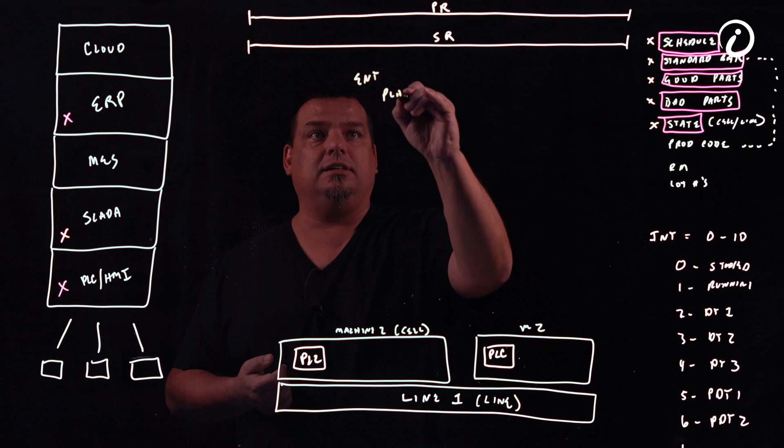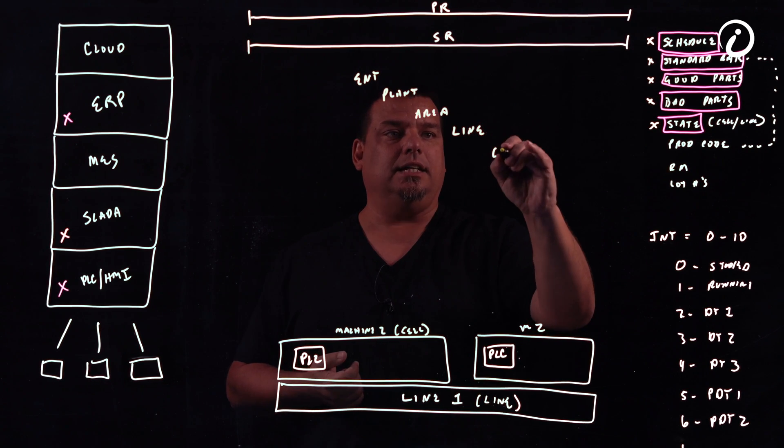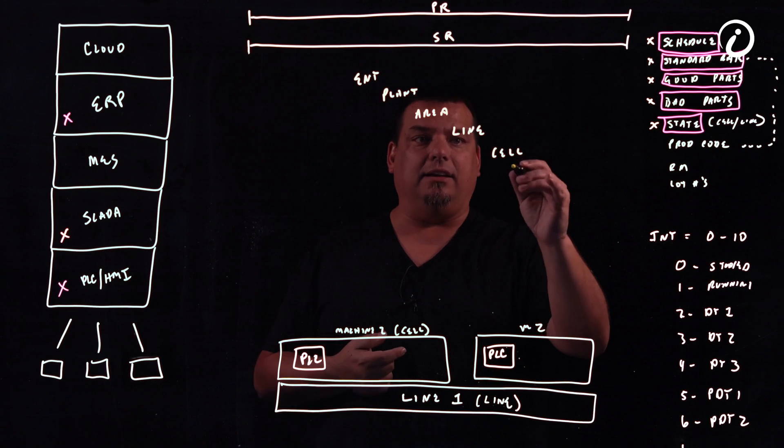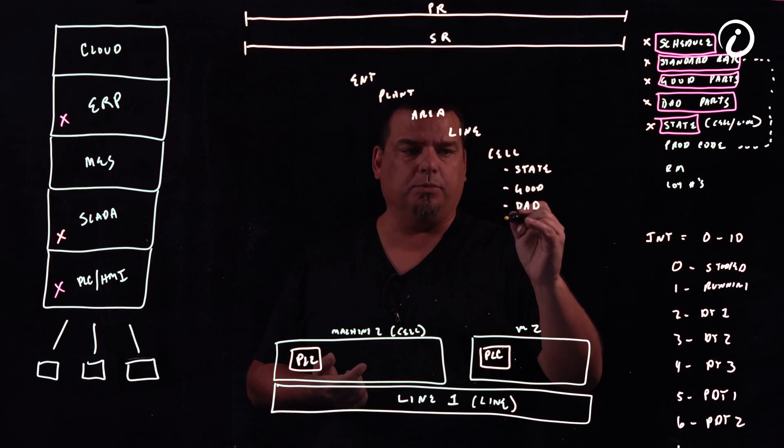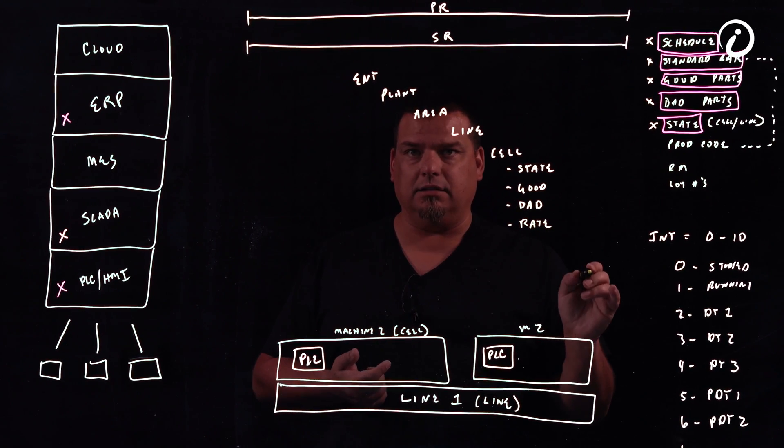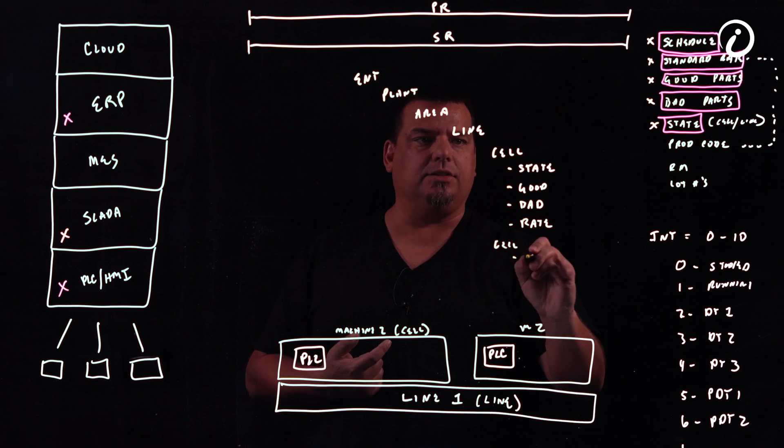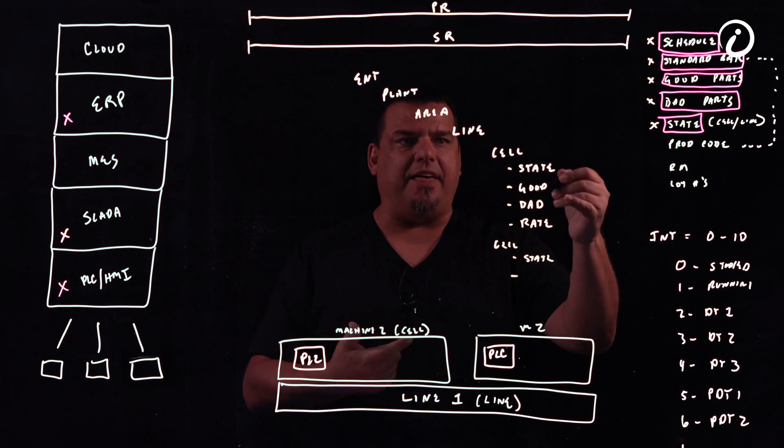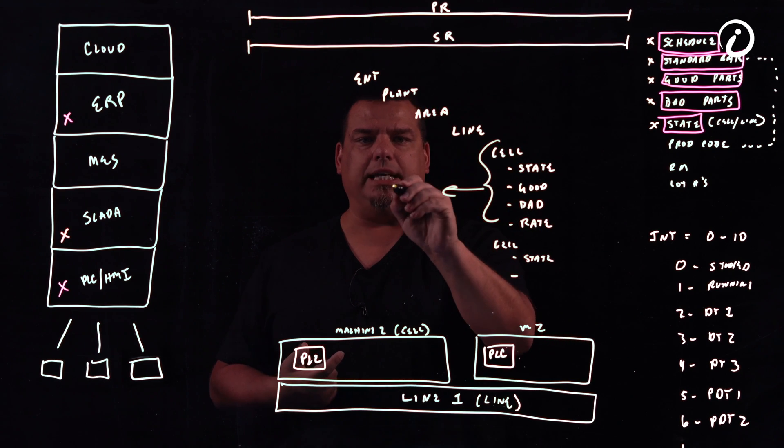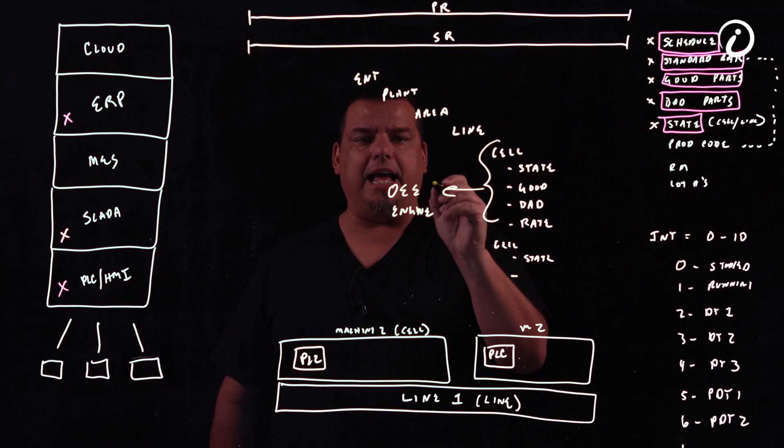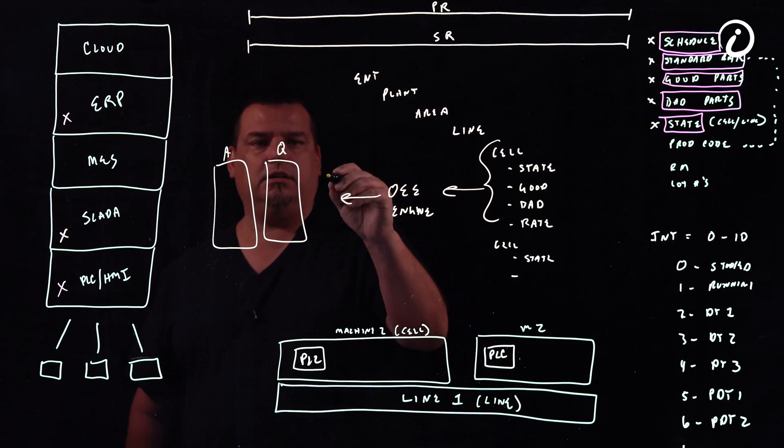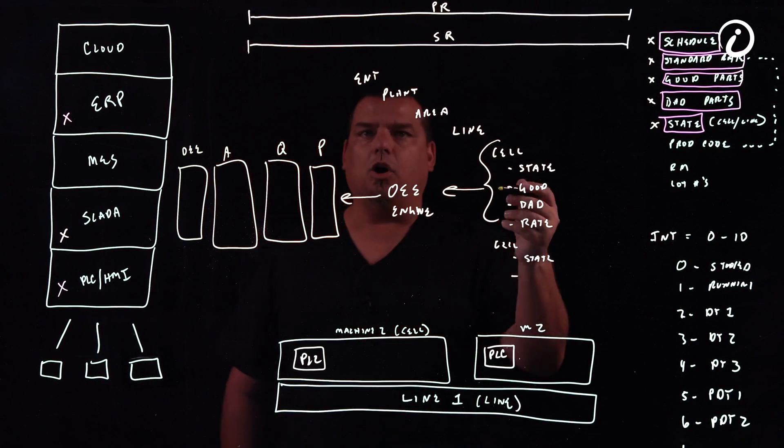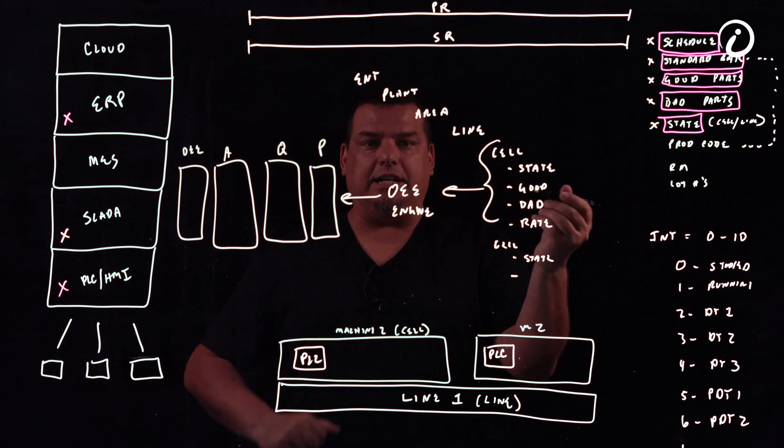And then what's the last thing that we do? The last thing that we do is we put all of this stuff together. So enterprise, plant, area, line, and cell. We organize it. And what we do is we basically put in our state. We put in our good. We put in our bad. We will put in... Let's put the rate here. We'll put our rate here. From here, we can roll all of this up to various layers. So we put it in here. And then we dump this into an OEE engine. And that engine spits out a visual, which is going to be something like this. Availability, quality, performance, and OEE. So we have to organize all these things together and spit it out.